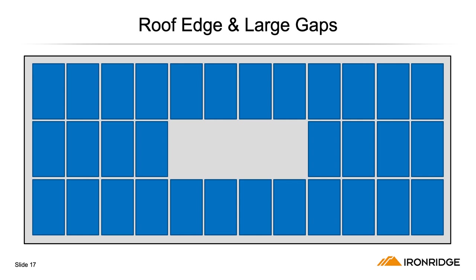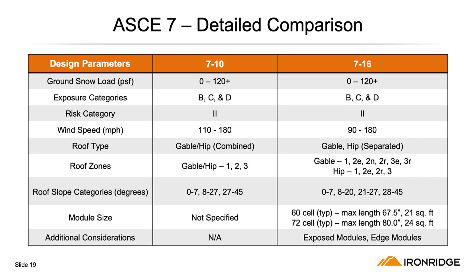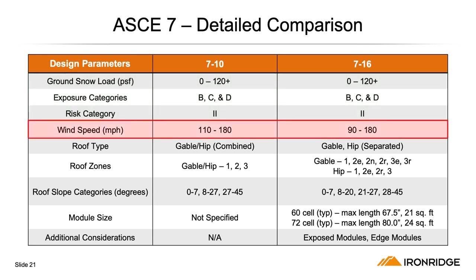Another discovery was that there were effects from roof edges and large gaps in the array — these increase net wind pressures. In a side-by-side comparison of how the two codes impact solar design parameters, you can see that nothing has changed in terms of snow loads, exposure categories, or risk categories. However, there's been some reduction in the wind speed maps for the majority of the U.S.